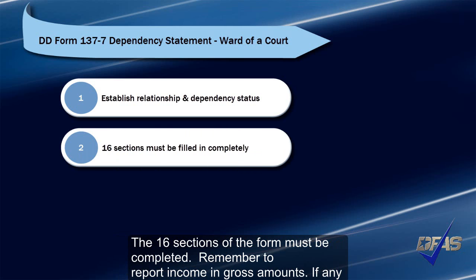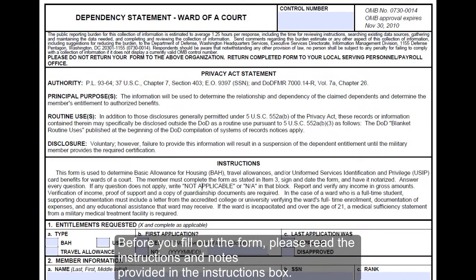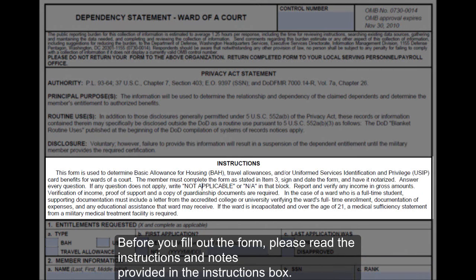The 16 sections of the form must be completed. Remember to report income in gross amounts. If any question does not apply to your situation, please write N/A in that block. Forms with incomplete answers or unfilled boxes cannot be processed. Before you fill out the form, please read the instructions and notes provided in the instructions box.